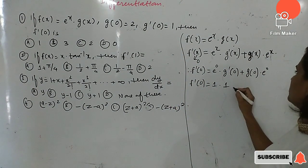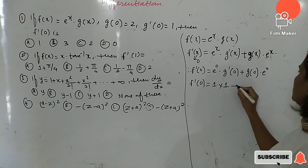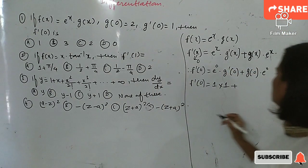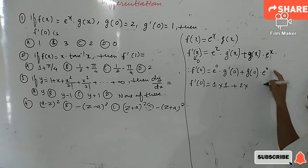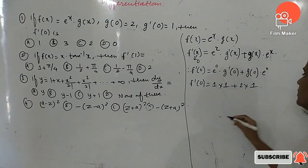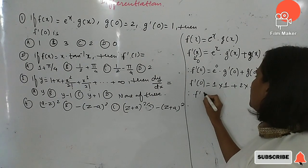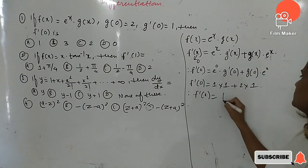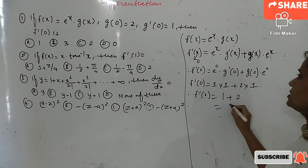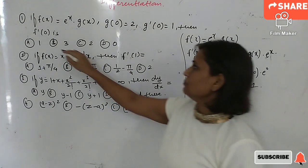We have g'(0) = 1, so one times one is one. Plus g(0), which is given as 2, times e^0 which is again 1. So f'(0) = 1 + 2 = 3. The correct option is B.